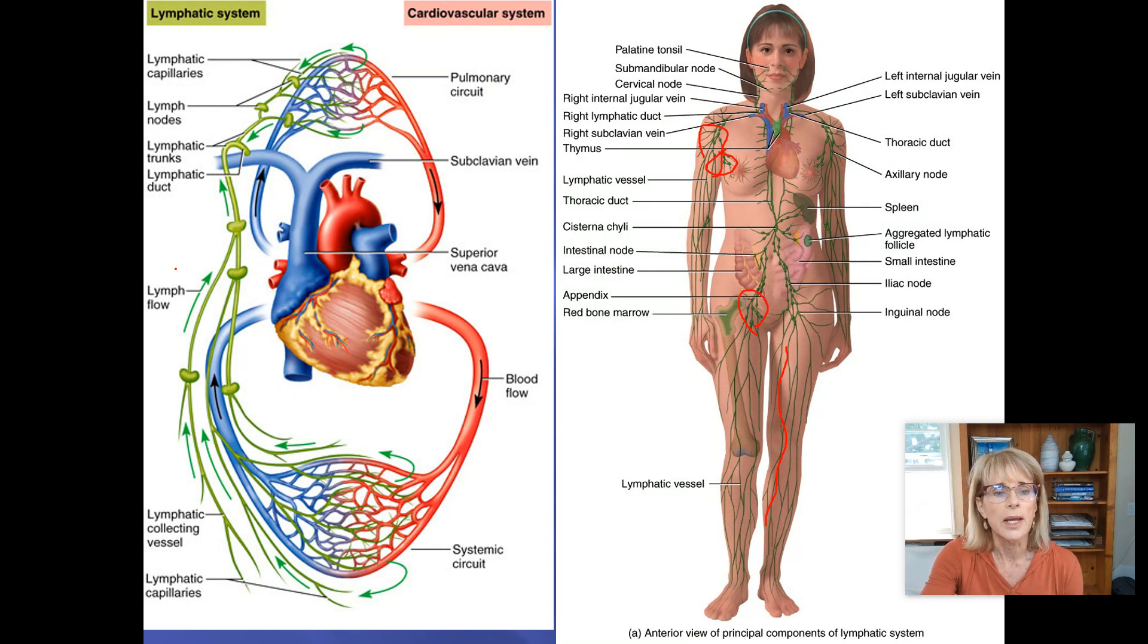Look over here at this image on the left. They have got the cardiovascular system with the lymphatic system superimposed on top of it. Let's look at the differences. When it comes to the cardiovascular system, blood leaves the heart in blood vessels called arteries. This is an artery right here. Then it'll go through little capillaries.